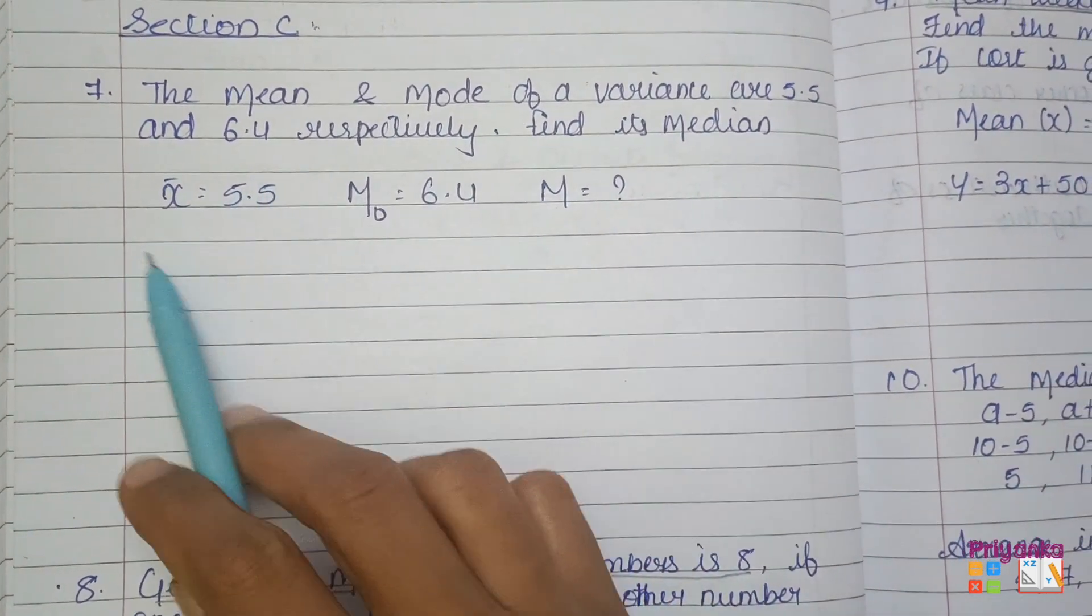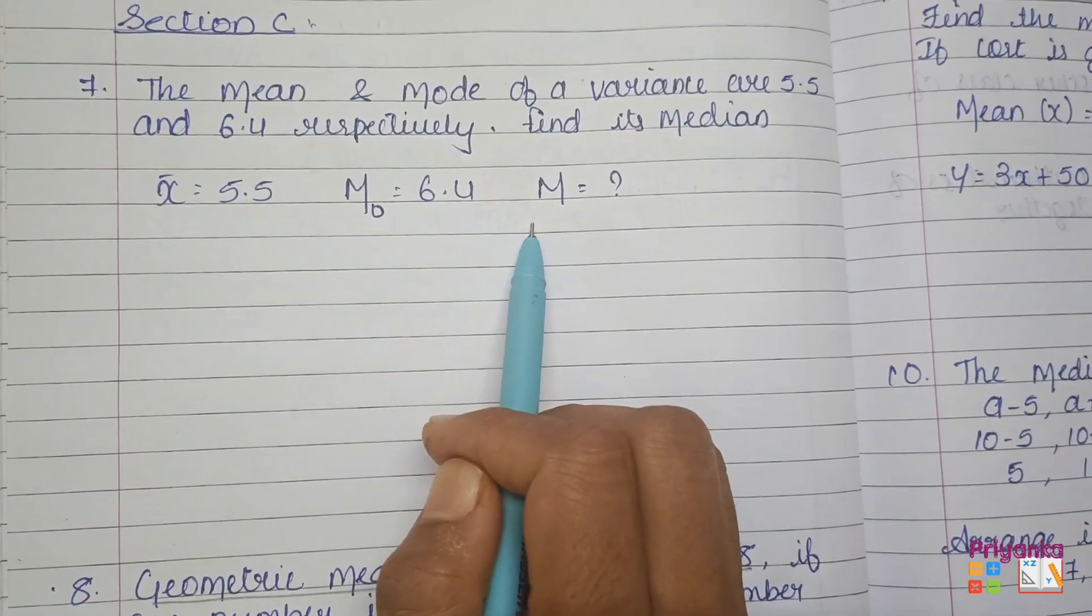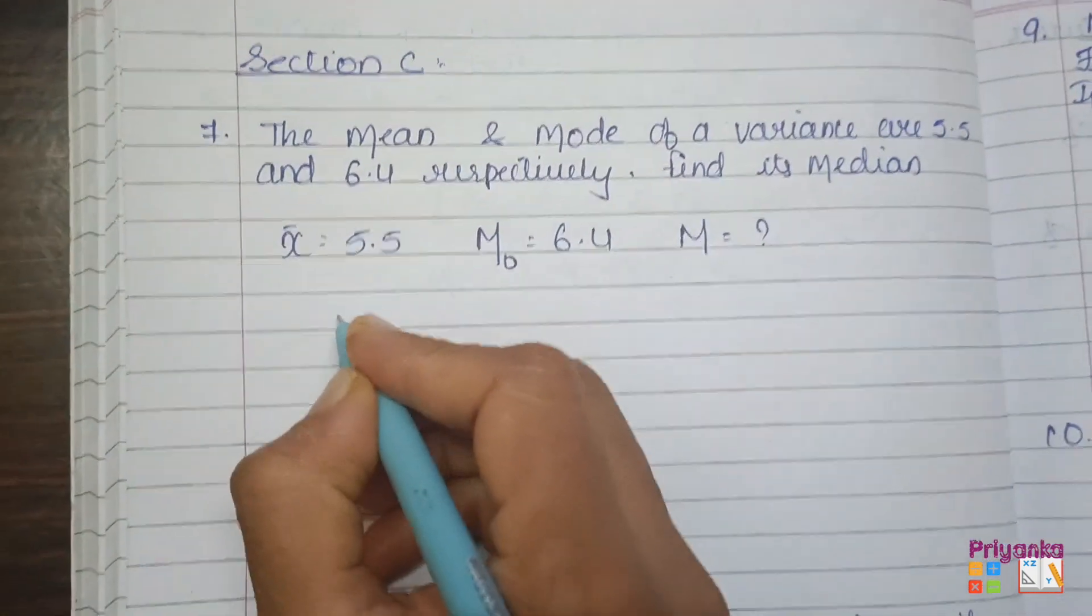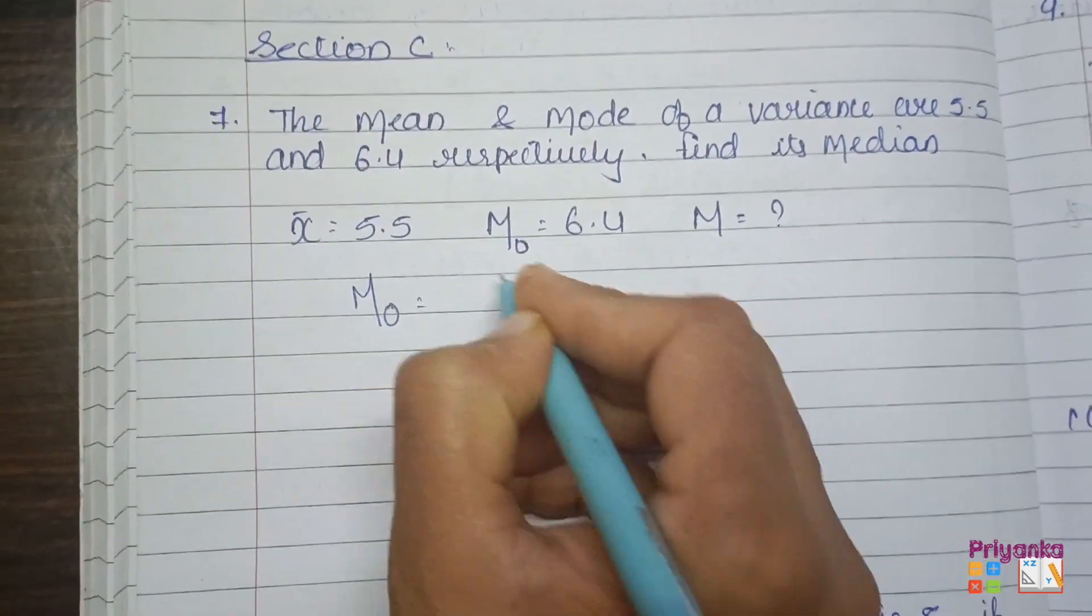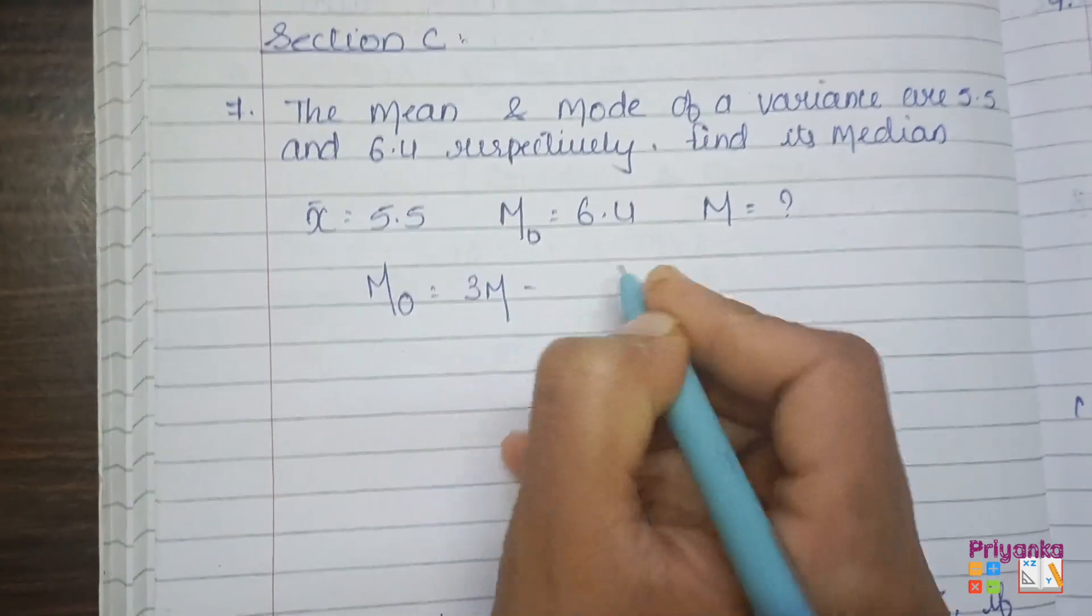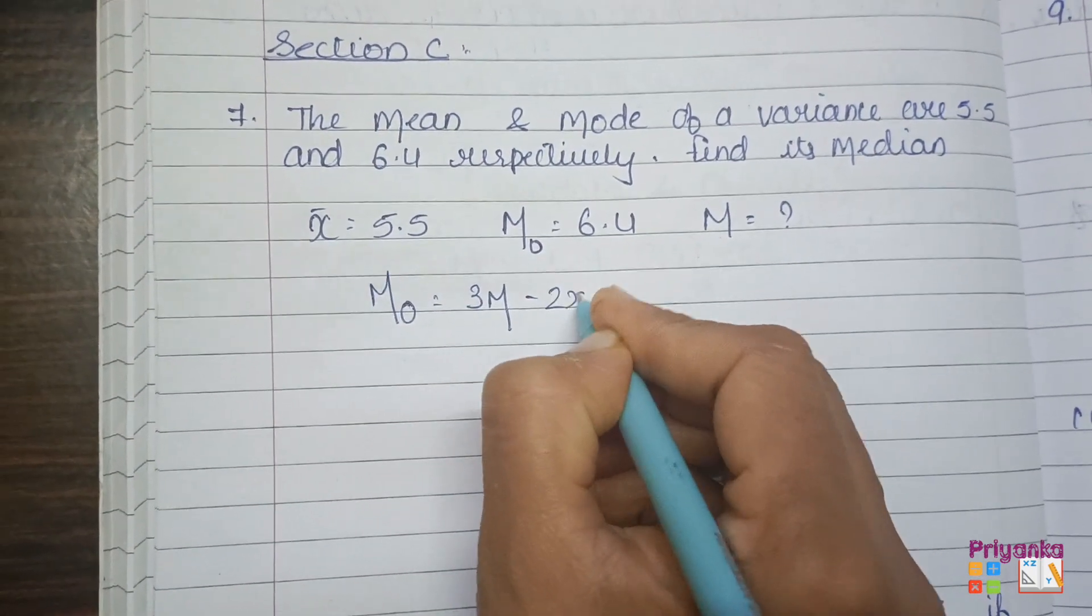Find out the formula. In which formula do all three come together? Obviously, in empirical formula. Remember, empirical formula: mode is equal to 3 median minus 2 mean.